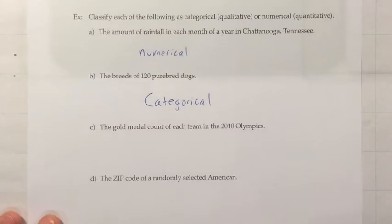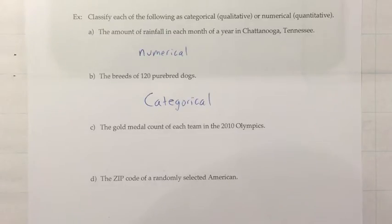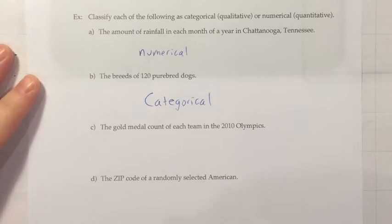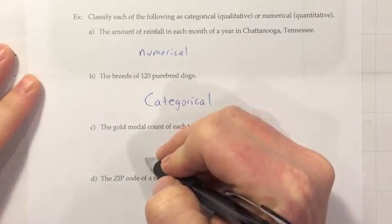The gold medal count of each team in the 2010 Olympics — we might ask how many gold medals did the USA have? Let's say it was 42. That's a number, so that would be numerical.